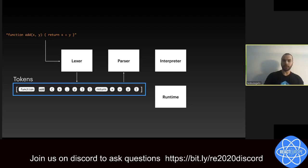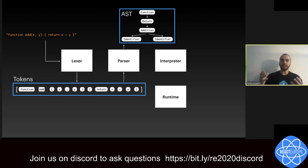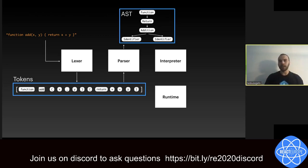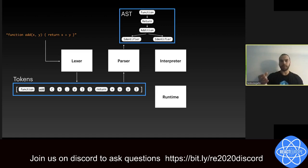Once we have our tokens, we feed them into the parser. The parser's job is to look at that and build the abstract syntax tree, or AST for short. The AST is just a tree representation of a program. So the parser would see a function keyword and then expect the name of the function, followed by the opening parentheses for function parameters. At the top level we have our function node, inside which is a return statement, and the value being returned is the addition of two identifiers — x and y.